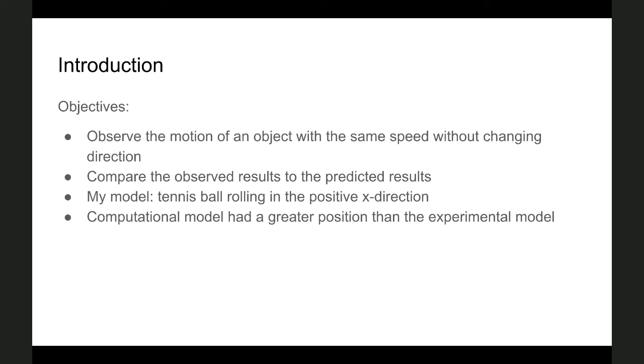For my model, I used a tennis ball, and I rolled it across the table. The tennis ball was rolled in the positive x direction across the table, which you will see in the upcoming slides. As a result, the computational model had a greater final position than the experimental model.